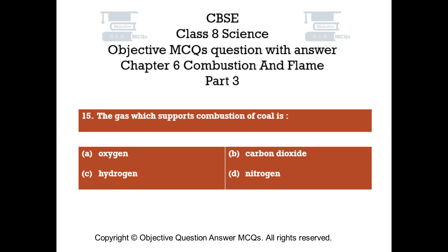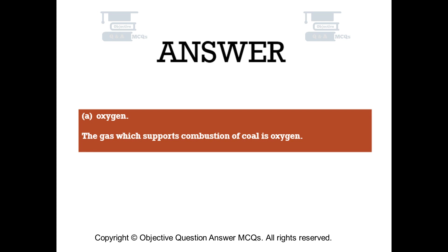Question number 15. The gas which supports combustion of coal is: Option A Oxygen, Option B Carbon Dioxide, Option C Hydrogen, Option D Nitrogen. The right answer is Option A — Oxygen. The gas which supports combustion of coal is oxygen.